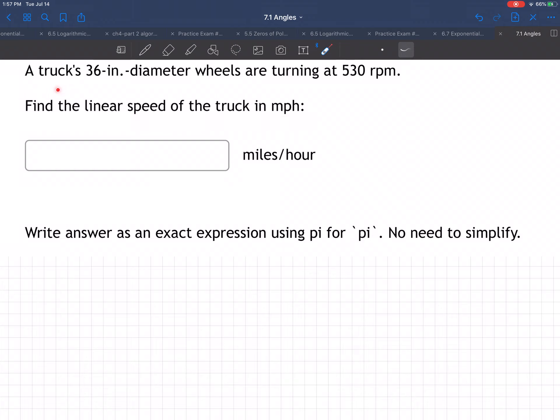So this is converting from how fast the wheels are turning in revolutions per minute to the actual linear speed of the truck, like how fast the truck is moving down the road. This can be a little tricky, this is like a physics problem basically.